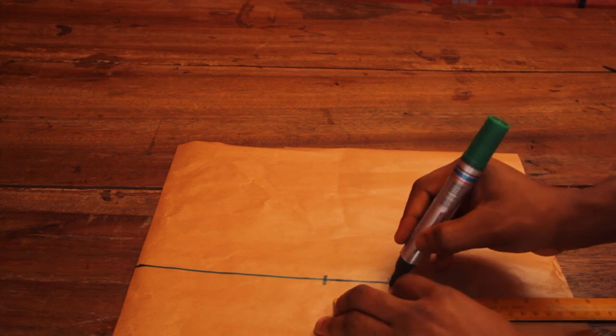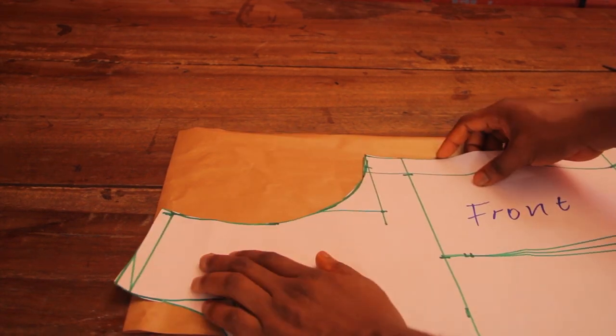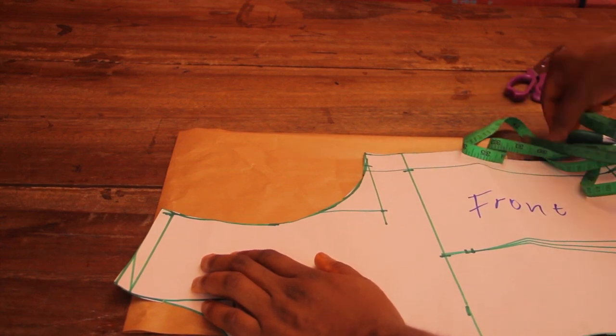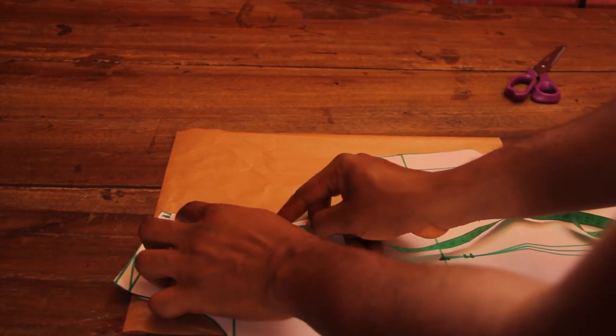The next thing I would do is to draw a curve. Now I like drafting my sleeve immediately after I have drafted my bodice because I like to measure out my armhole.